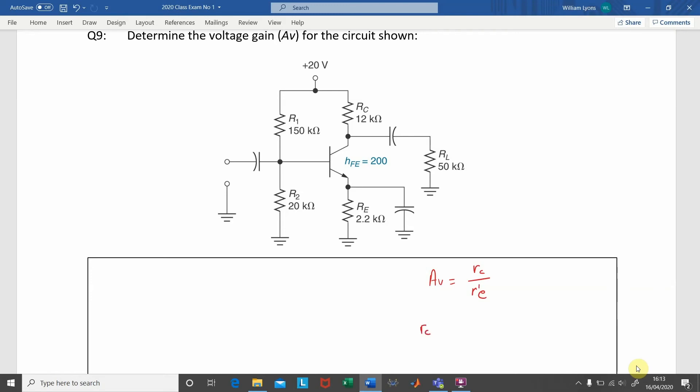We can calculate the AC collector resistance, RC, by getting the collector resistance in parallel with the load resistance. So looking at the circuit diagram that we have been given, RC is 12 kOhms in parallel with RL, which is 50 kOhms. If we perform this calculation, we get a result of the AC collector resistance of 9.68 kOhms.